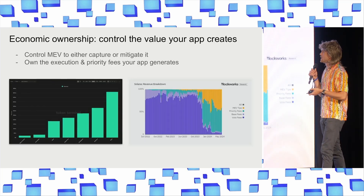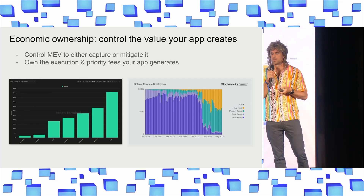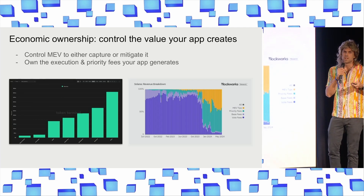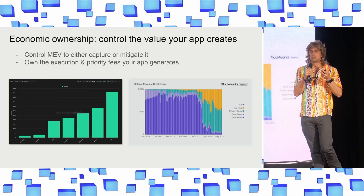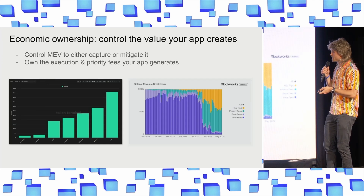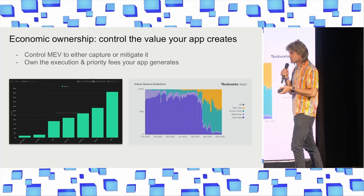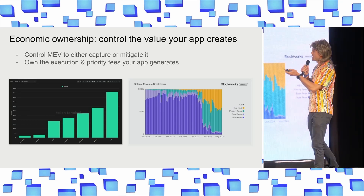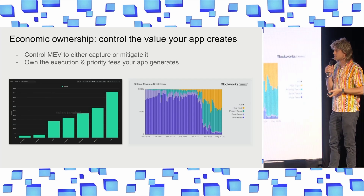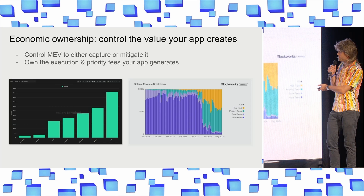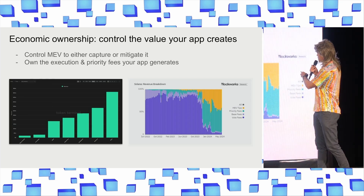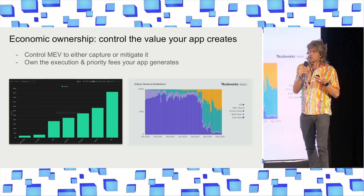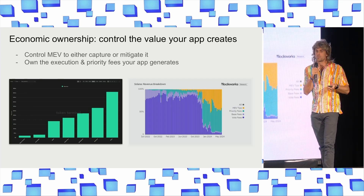And when it comes to economic ownership, I mean controlling the value that your application creates. So aside from just capturing the base level application fees, there's also the congestion or execution fees and MEV. And when you build a rollup as opposed to a smart contract, you're actually able to capture those fees. This is a very significant amount of money — the top L2s on Ethereum make millions of dollars in monthly revenue. And even if you look at Solana itself, it makes millions of dollars in daily revenue, and 90% of that is MEV and congestion fees that actually could be and probably should be captured by the applications that are generating it.